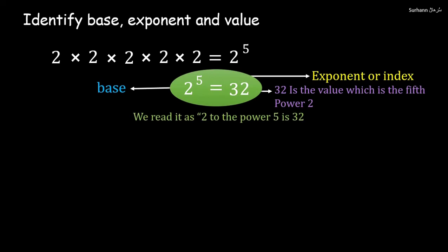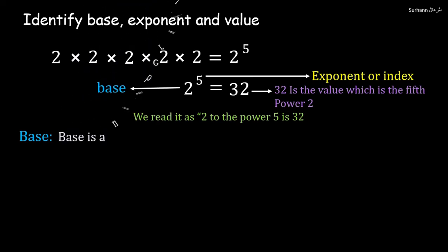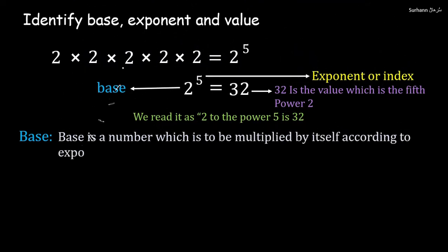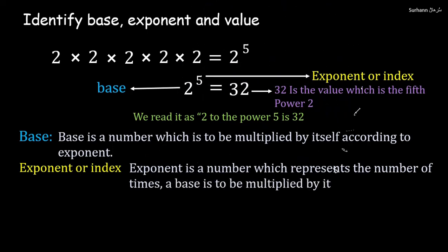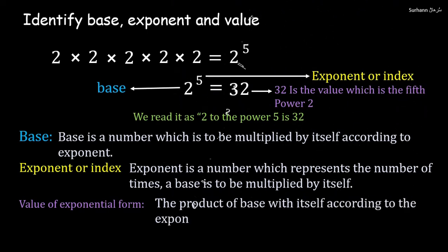We read it as 2 to the power 5 is 32. Now you may ask me, what is the base? Base is a number which is to be multiplied by itself according to the exponent. And what is the value of exponential form? It is the product of base with itself according to the exponent.